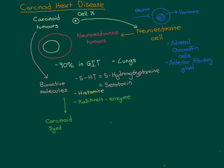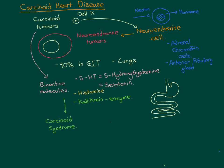Usually you only get carcinoid syndrome after the carcinoid tumour has metastasised to the liver causing significant liver damage. Most carcinoid tumours arise in the gastrointestinal tract, and all venous blood from the GIT goes back to the liver first. The liver takes out any nasties that might endanger the rest of the body, including these bioactive molecules.